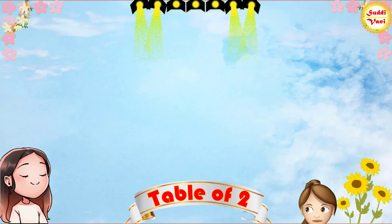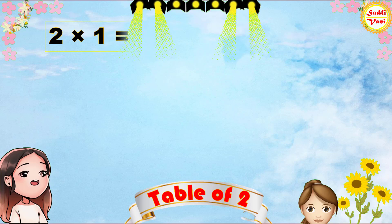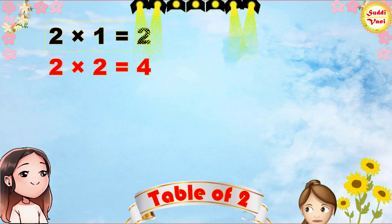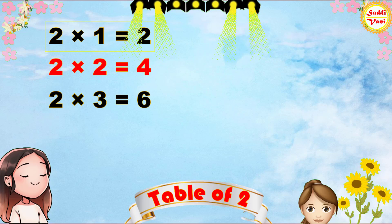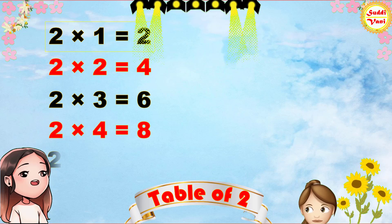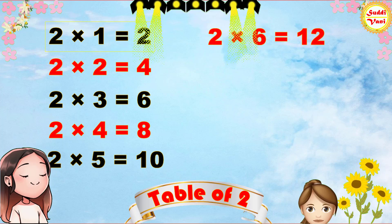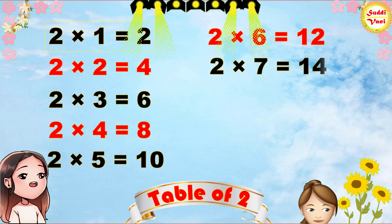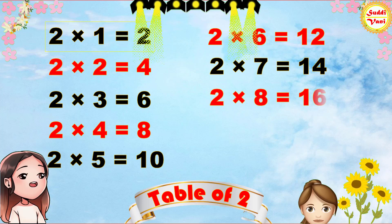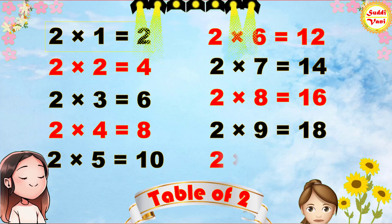Once again: 2 times 1 is 2, 2 times 2 is 4, 2 times 3 is 6, 2 times 4 is 8, 2 times 5 is 10, 2 times 6 is 12, 2 times 7 is 14, 2 times 8 is 16, 2 times 9 is 18, 2 times 10 is 20.